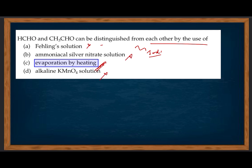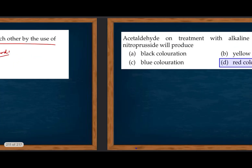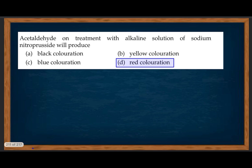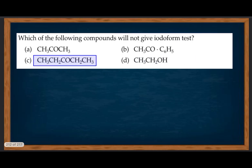Acetaldehyde on treatment with alkaline solution of sodium nitroprusside will produce red coloration. Which of the following compounds will not give iodoform? A compound needs a CH₃CO group to give iodoform reaction.